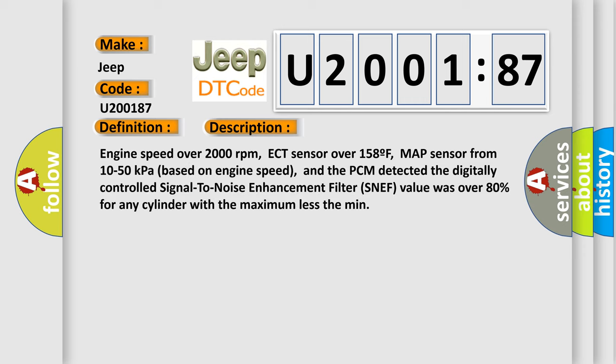Engine speed over 2000 revolutions per minute, ECT sensor over 158F, MAP sensor from 10 to 50 kilopascals based on engine speed, and the PCM detected the digitally controlled signal to noise enhancement filter SNEF value was over 80% for any cylinder with the maximum less than min.